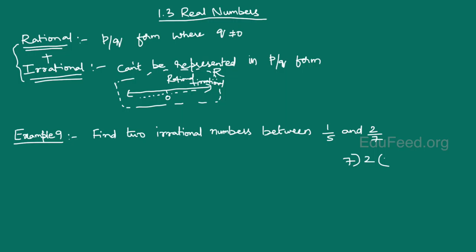It covers the entire number line. Fantastic. Let's move on to example 9. Find two irrational numbers between 1 by 5 and 2 by 7. It's a very simple process. We will need to represent both 1 by 5 and 2 by 7 in decimal form.